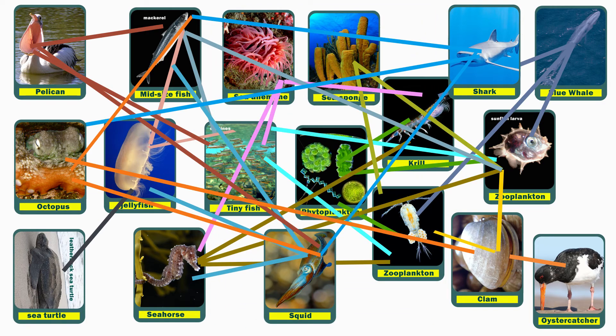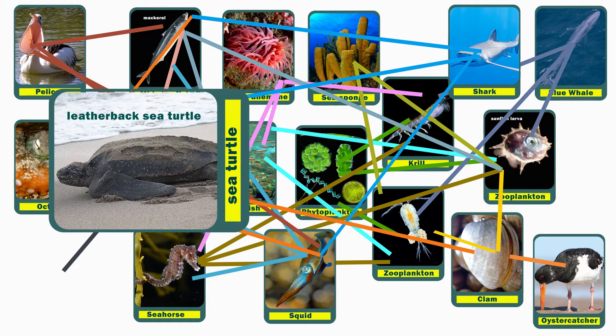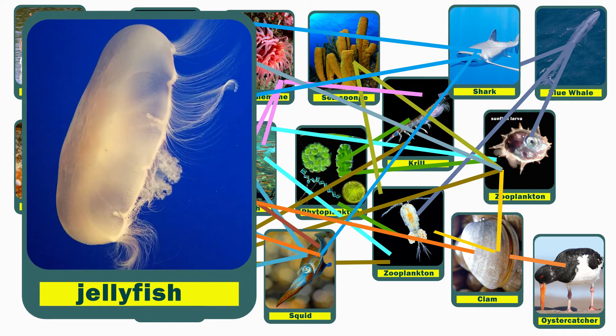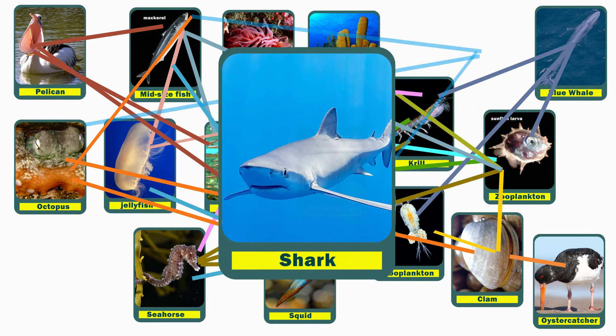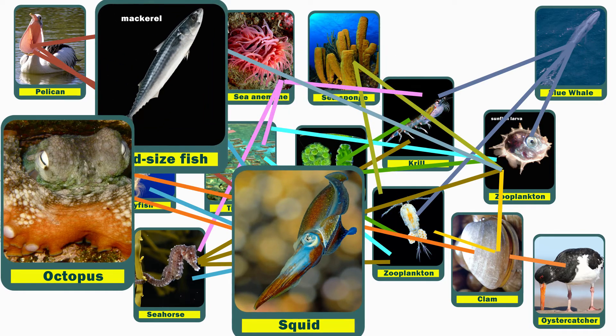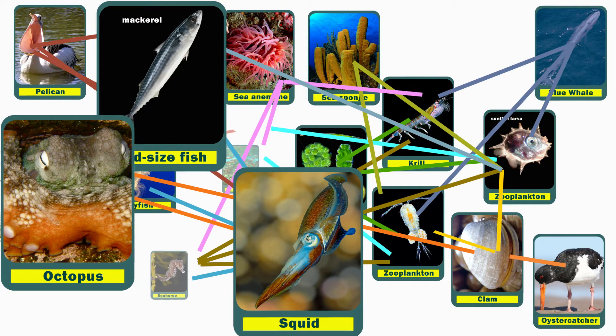Now the big predators on the outside of the food web are also super important. What would happen if you took away the leatherback sea turtles? You might have way too many jellyfish because they weren't there to eat them. What would happen if you remove the sharks? The populations of their prey would explode, and this can throw entire ecosystems out of balance.